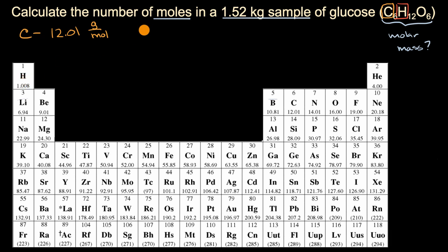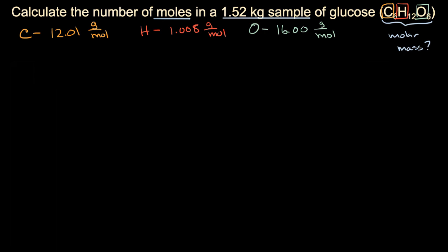And now we can think about hydrogen in the same way. Hydrogen has a molar mass of 1.008 grams per mole. And then last but not least, we have oxygen here. Oxygen, we can see from our periodic table of elements, has a molar mass of 16.00 grams per mole. And so now we have all the information we need from our periodic table of elements.